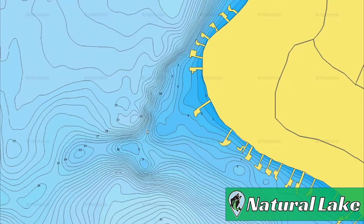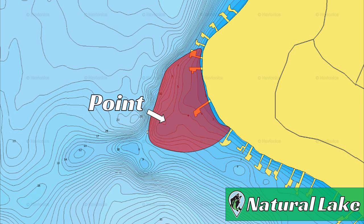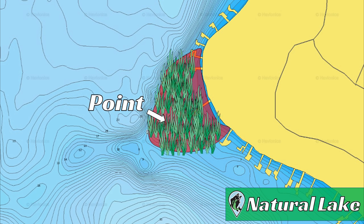Finally, let's take a look at a point on a natural lake. Natural lakes are found up north and down in Florida. In this case, we have a gradual rounded point that sticks off from the shoreline. In many cases you're going to have some form of aquatic vegetation growing on top of this point — this might be milfoil, hydrilla, or other types of submerged grass. Bass will usually set up where there are holes in the grass on top of these points, because this is where bluegill and perch will spawn during the summer and early fall.